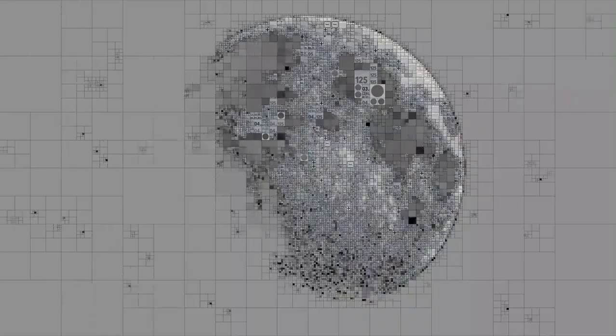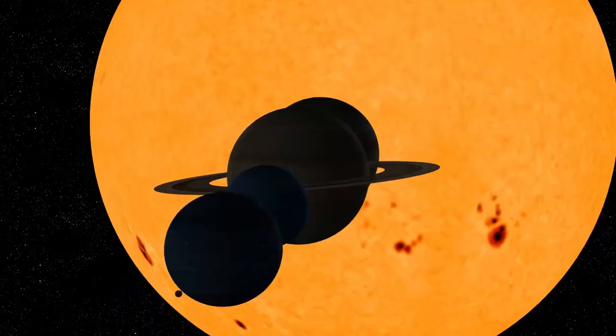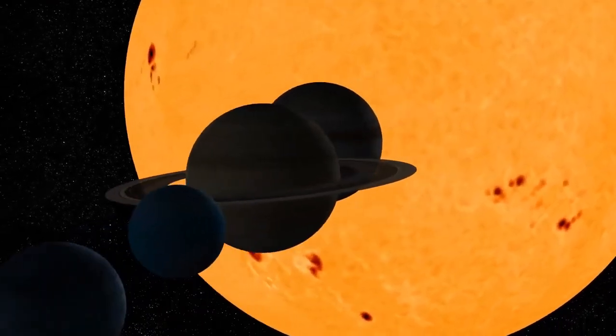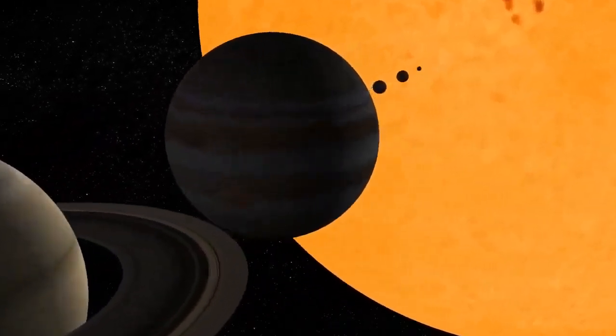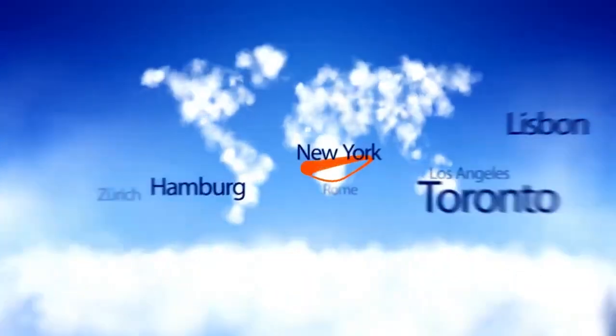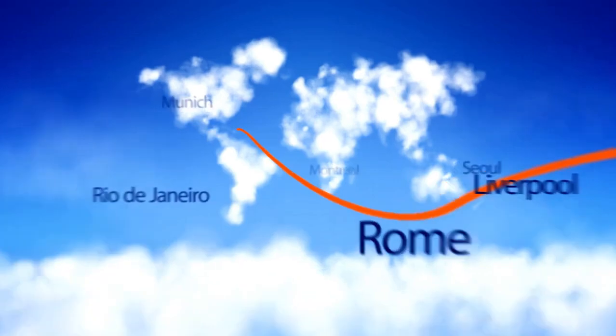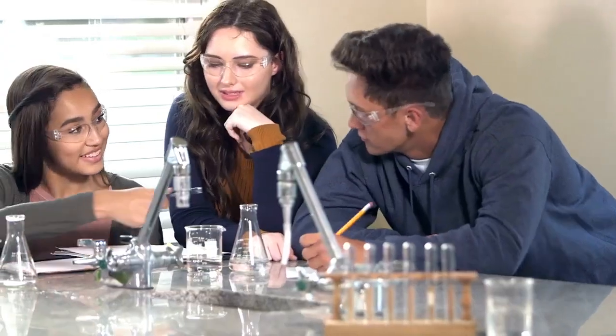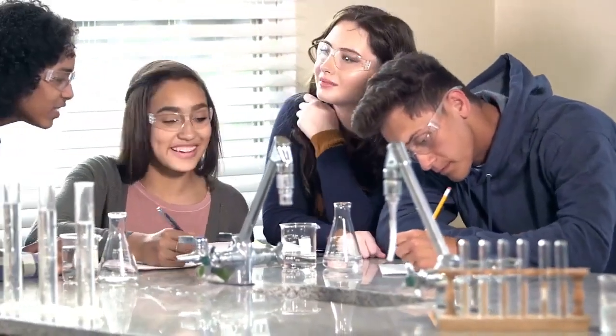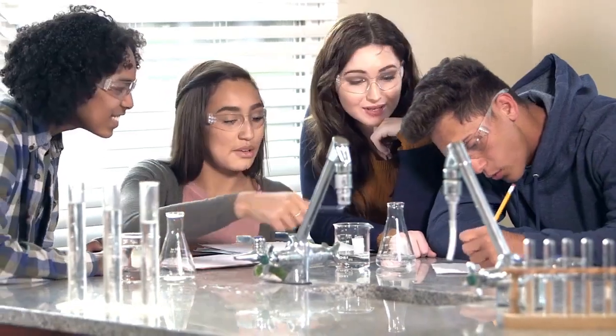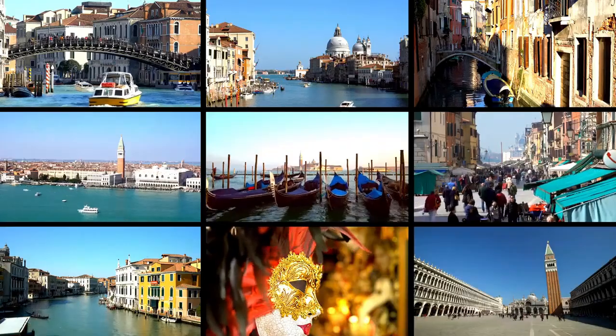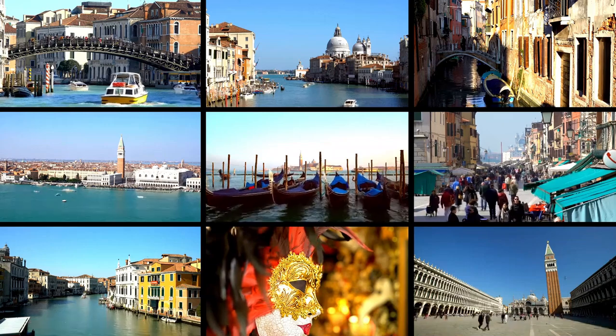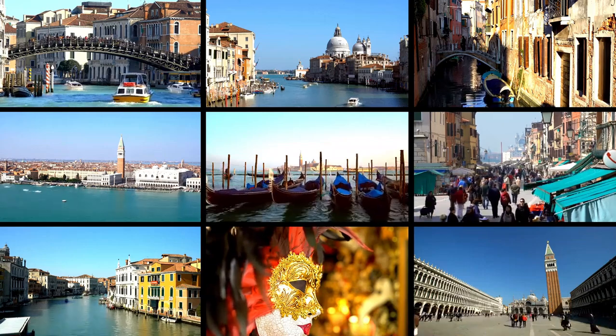Voyager 2's final transmissions included some of the most hauntingly beautiful images ever taken, snapshots of the edge of the solar system and the faint glow of distant stars. These images are a farewell gift from a spacecraft that has traveled farther than any human-made object in history. These final glimpses remind us of the vastness of space and the small yet significant role humanity plays within it. They serve as a poignant reminder of how far we've come and how much there is still to discover.